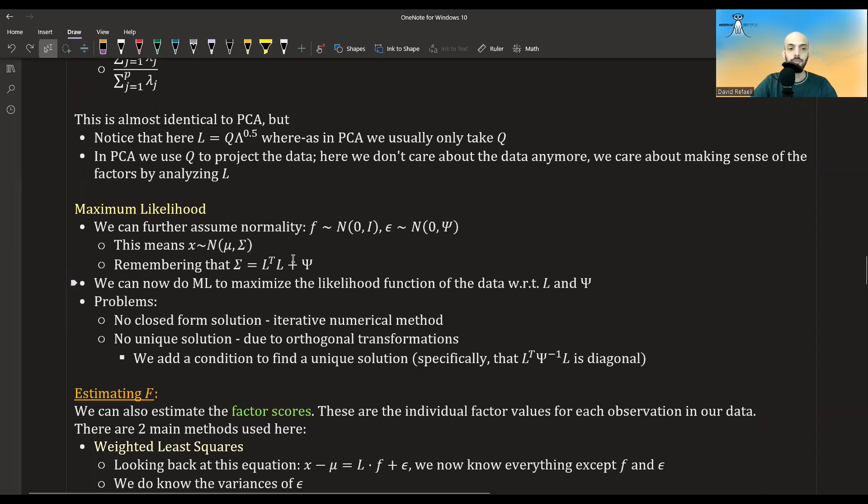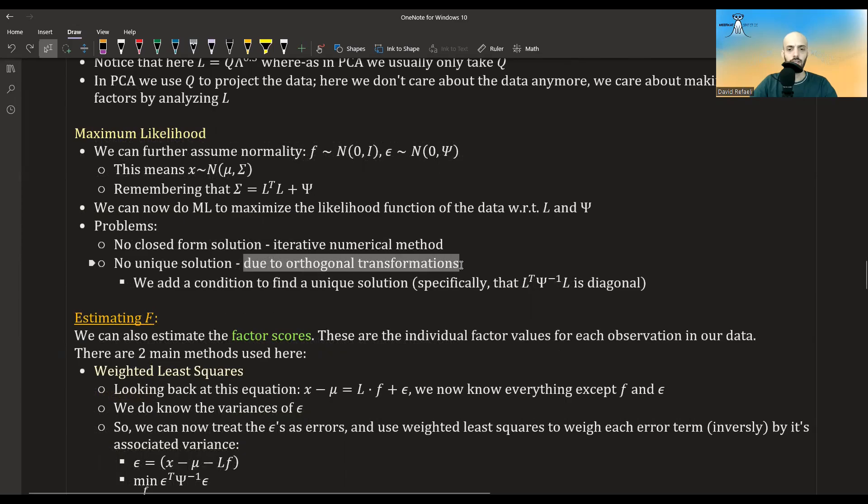Now, there are a few problems to doing this. One is that there is no closed form solution. We have to use iterative numerical methods. But the bigger problem is that there is also no unique solution. So there could be many Ls and many psis. And this is due to the orthogonal transformation, as I will show you later on in this video.